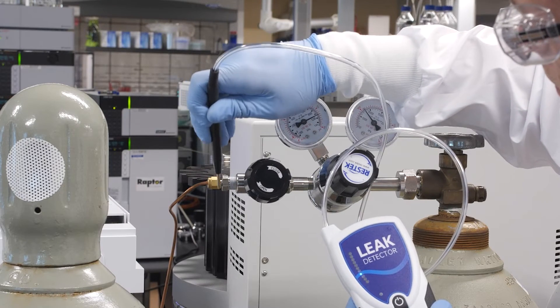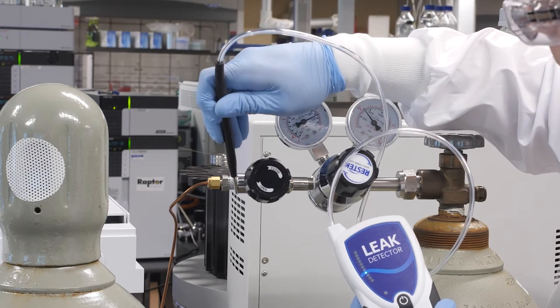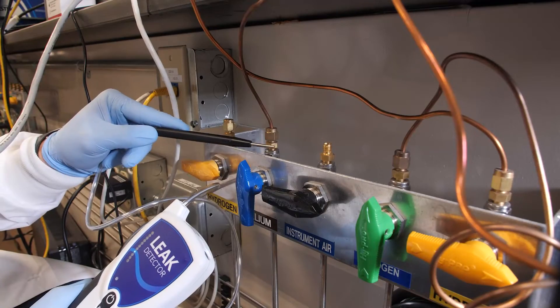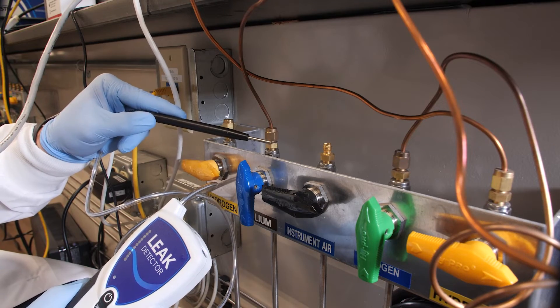When checking for leaks, it's important to use an electronic leak detector. Start at the beginning, the source, and work your way through the instrument to the detector.